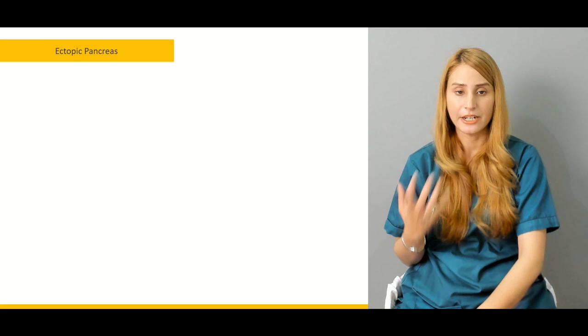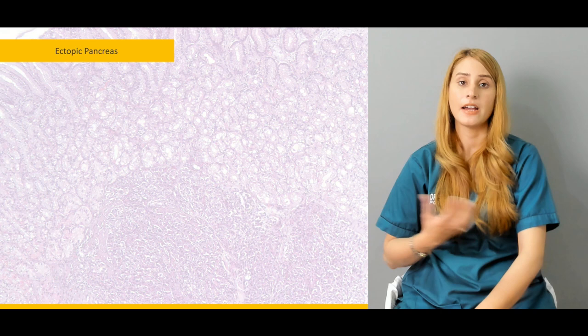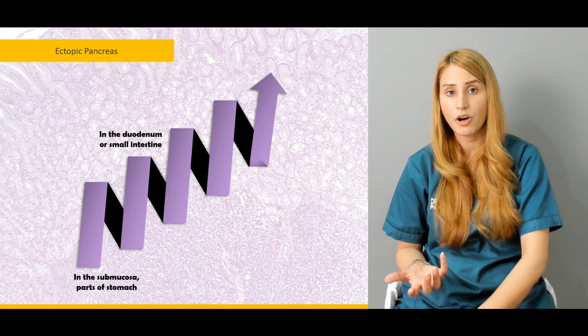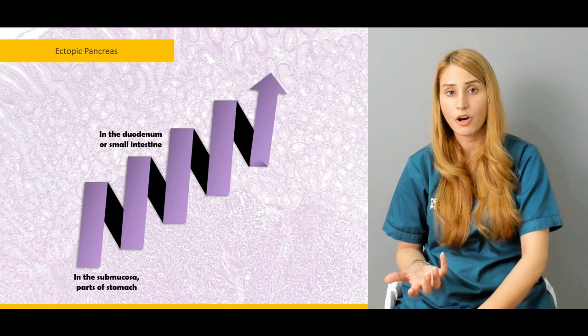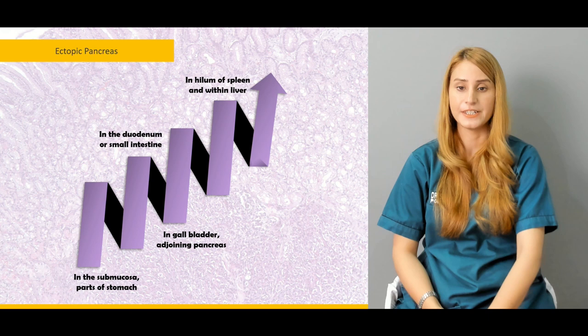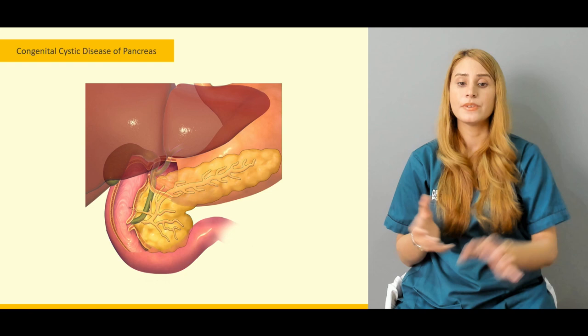Ectopic pancreas is another congenital anomaly where pancreatic tissue is located elsewhere — possibly in the spleen, liver, CBD, stomach submucosal layer, duodenum, small intestine, or gallbladder. It can be found in the splenic hilum or within the liver, and in the wall of the GI tract where it forms duplication cysts.